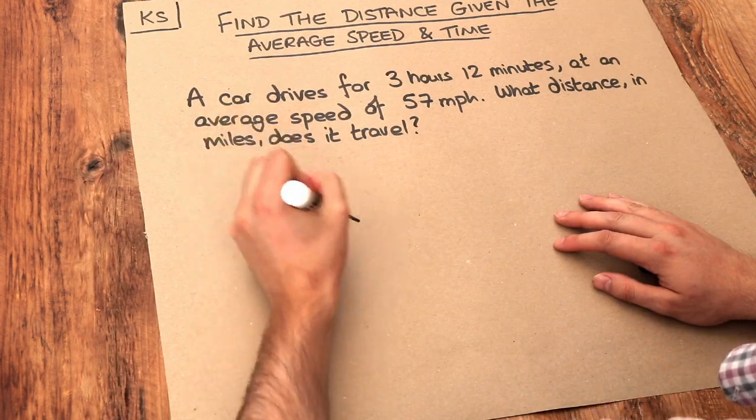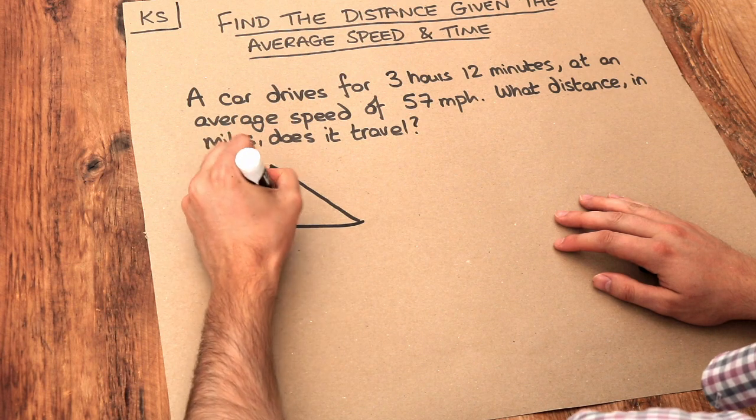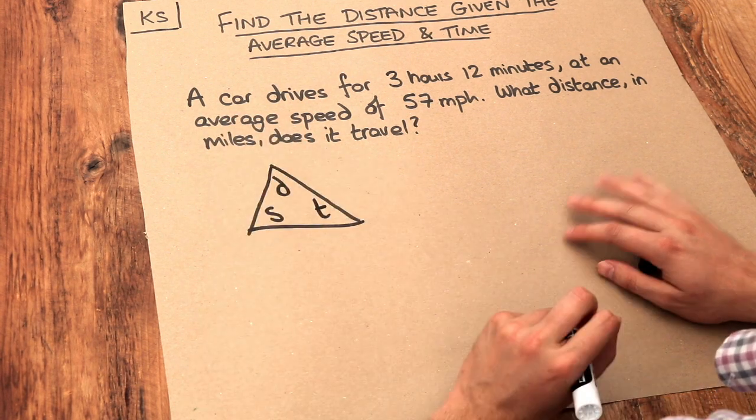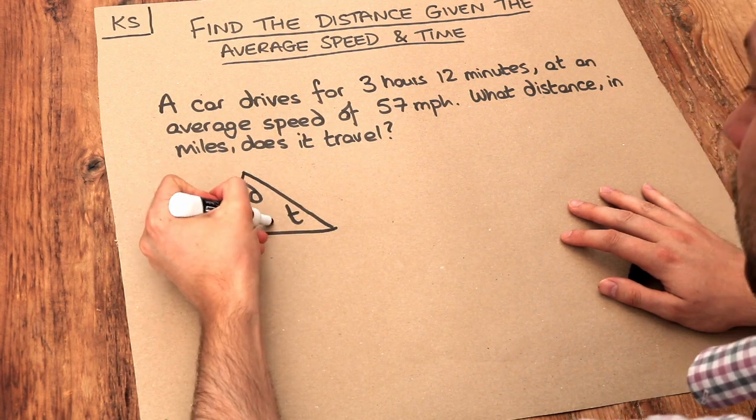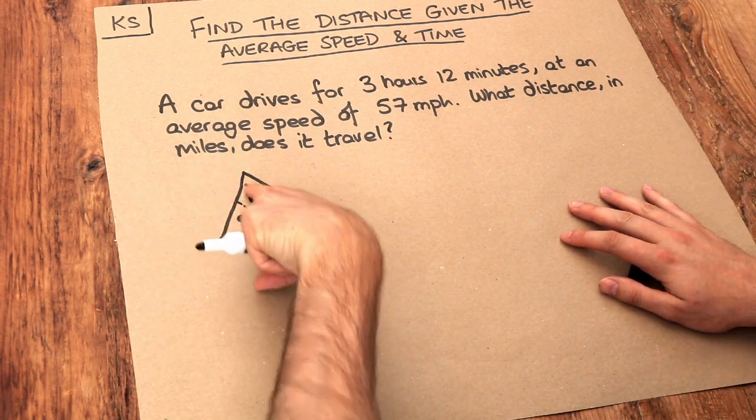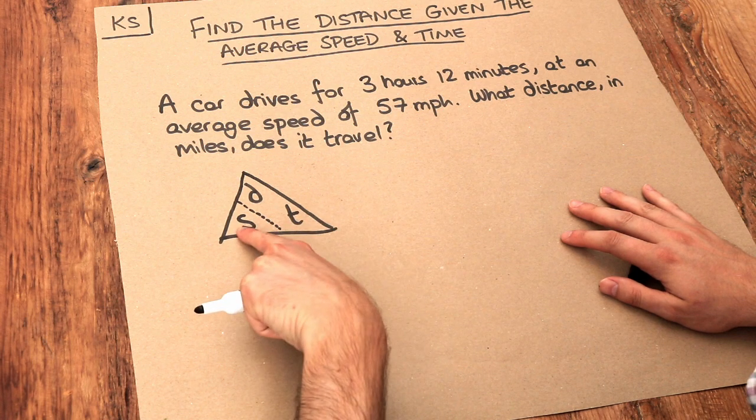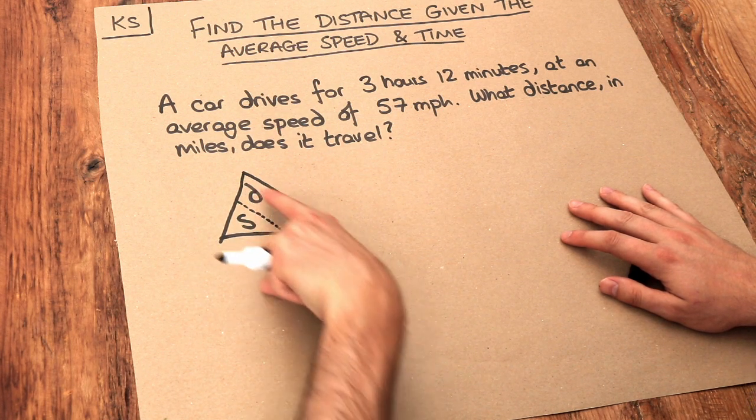In previous videos we saw something called this SDT triangle like this, and remember we could use this triangle in three different ways. If we put a line like this, now triangle, then we can see the D is above the T, and what we do is say that the speed is the distance over the time, so the distance divided by the time.